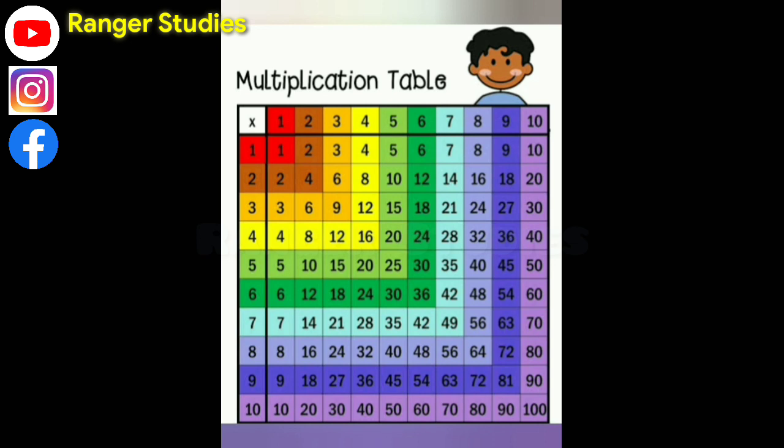4 1s are 4, 4 2s are 8, 4 3s are 12, 4 4s are 16, 4 5s are 20, 4 6s are 24, 4 7s are 28, 4 8s are 32, 4 9s are 36, 4 10s are 40.